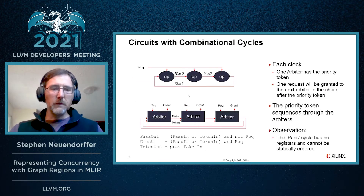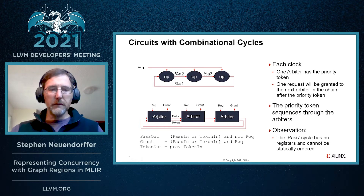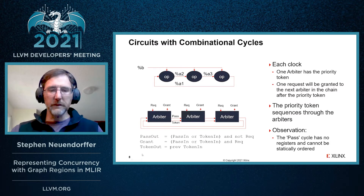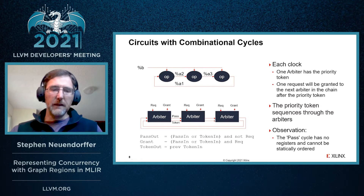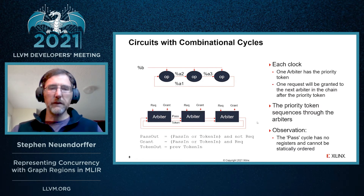One common use is to represent circuits with combinational cycles. For instance, this is a circuit that contains a sequence of arbiters, and the behavior of each arbiter is given by the sequence of operations shown. The important thing to recognize is that the token passed through the pass connection between each arbiter actually has a combinational cycle. There's no way to order these arbiters in any meaningful way — they have to actually execute concurrently. So this is a very useful place where we can use a graph region to represent this graph.